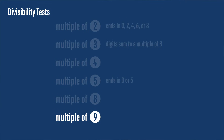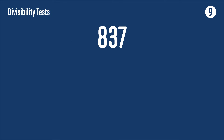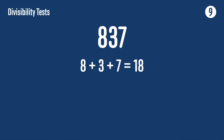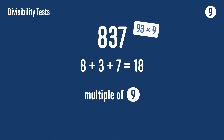You can also check if a number is divisible by 9 by looking at the sum of its digits. If that's a multiple of 9, then the original number is also a multiple of 9. For example, take the number 837: 8 + 3 + 7 = 18, which is a multiple of 9, so 837 is also a multiple of 9 — in fact it's 93 × 9. It's also a multiple of 3 because 18 is a multiple of 3, and any multiple of 9 is always a multiple of 3 as well.